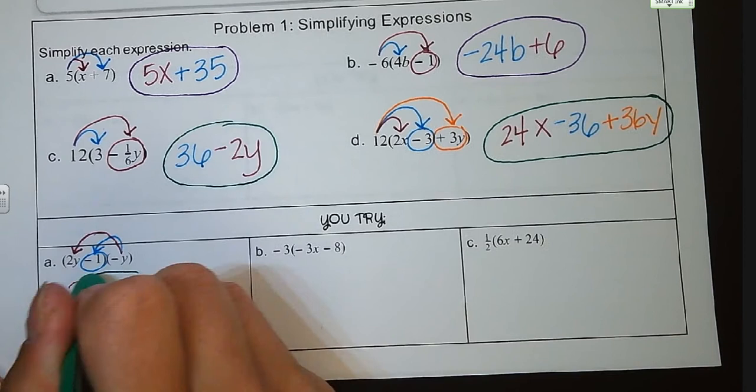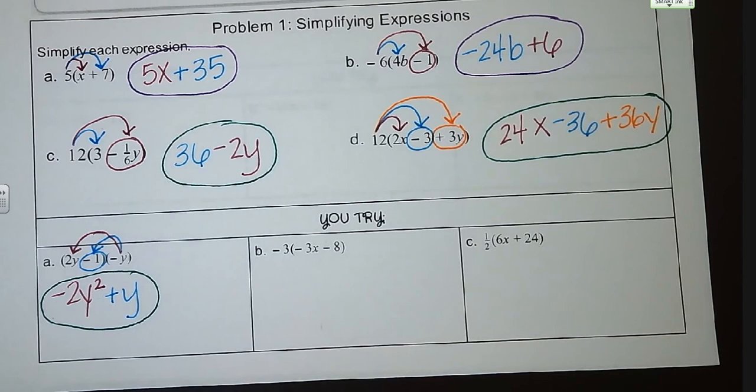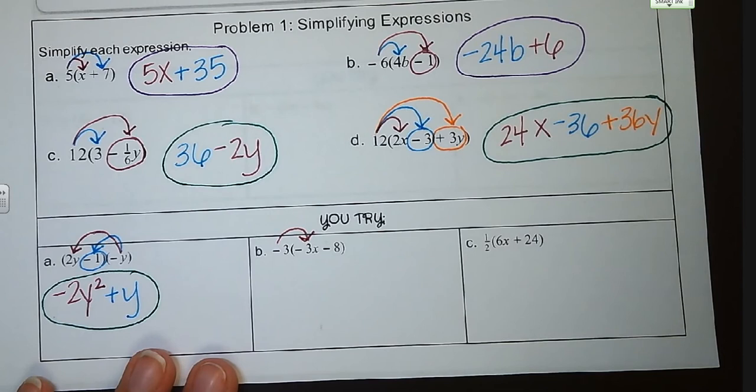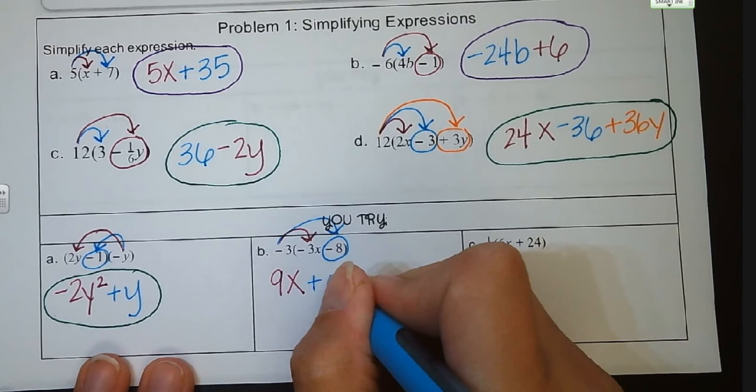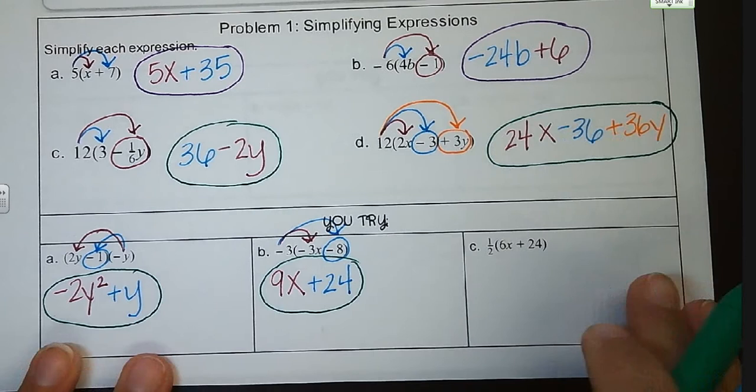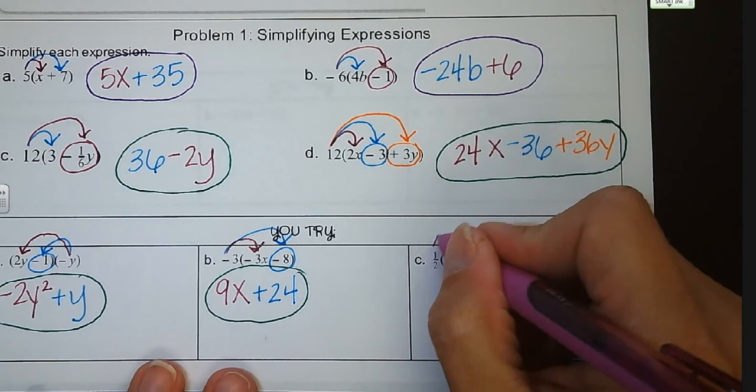We have negative 3 being distributed to negative 3X minus 8. So negative 3 times negative 3 is a positive 9X. Negative 3 times negative 8 is a positive 24. Letter C, we're multiplying 1 half by the term 6X plus 24. So 1 half times 6 is 3X, and 1 half times 24 is 12.